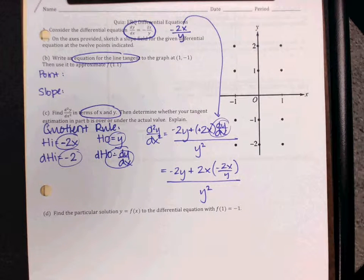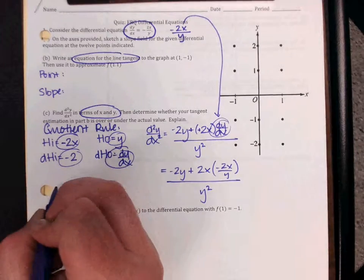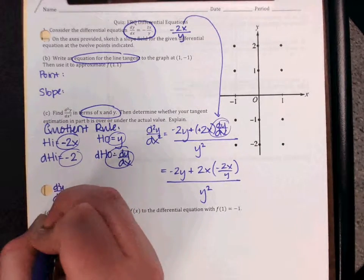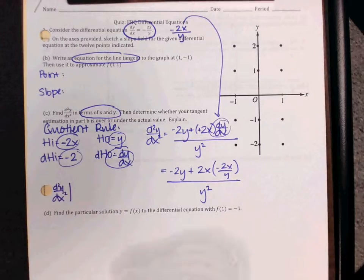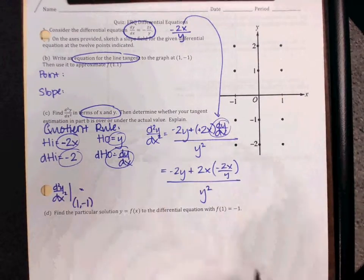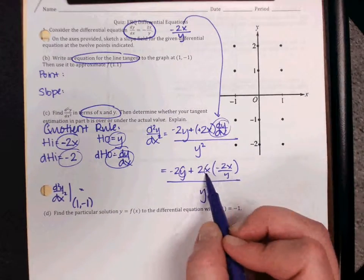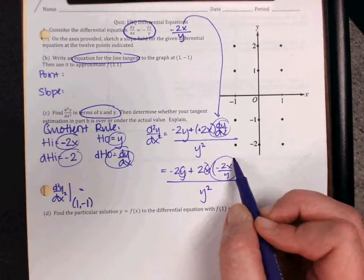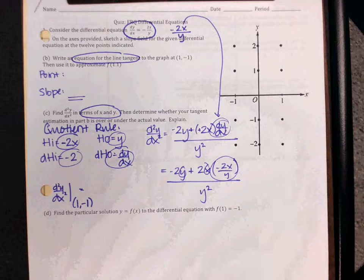Then it says to determine whether your tangent line in part b is over or under the actual value, well then I need to find d squared y dx squared at my point 1 negative 1. Now keep in mind that when you plug in, you have your x and your y, but your dy dx is going to be your answer from your slope here in part b.